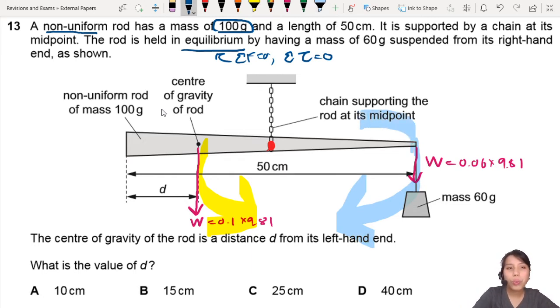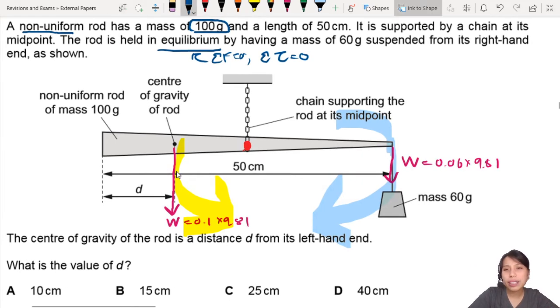So if you write down the whole working, it will look something like this. Clockwise moment or torque equals to anticlockwise moment. So your clockwise moment will just be the mass pulling it off. So you can write that down as 0.06 times 9.81. Very nice.